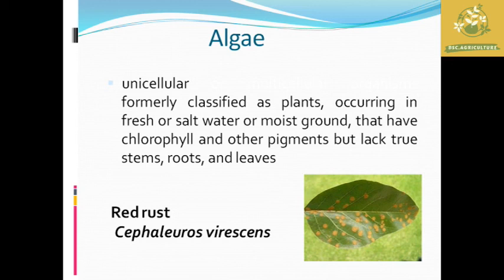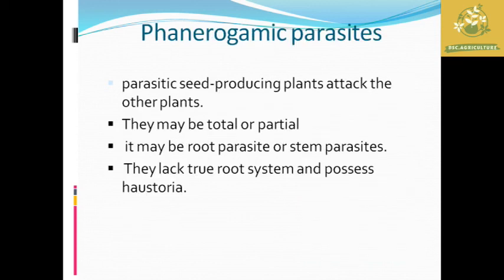Algae are mostly dependent on host organisms, so they require a host for their growth. For example, the red rust organism Cephaleuros virescens is the causative organism in most plants like citrus, tomato, mango, and most tree crops affected by this organism.